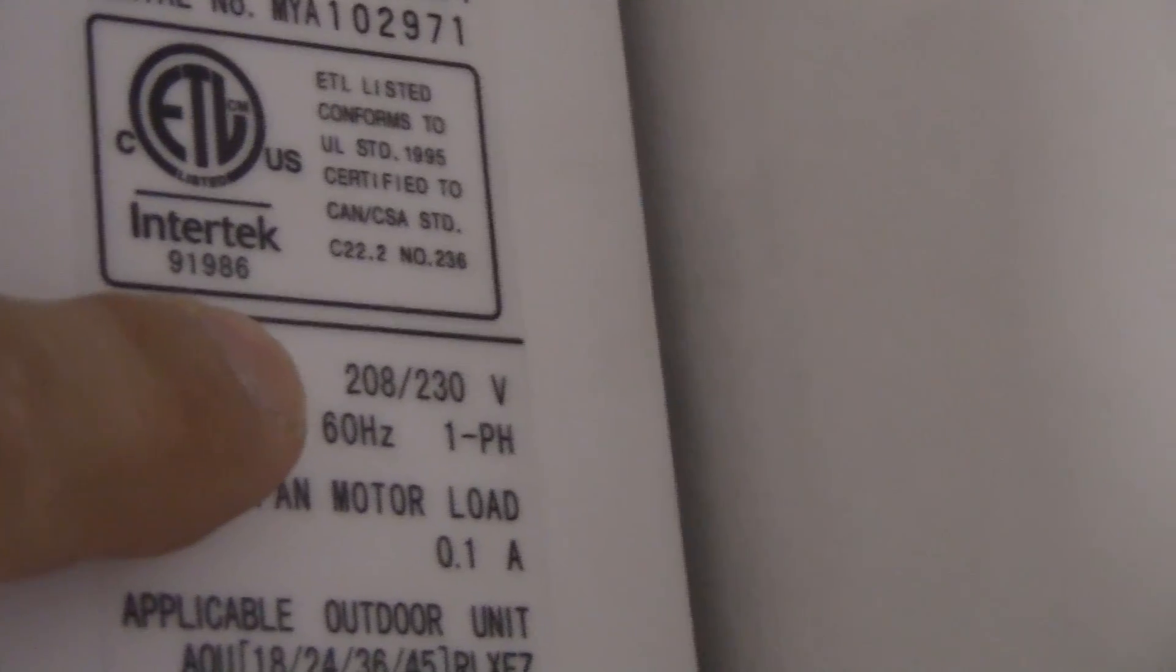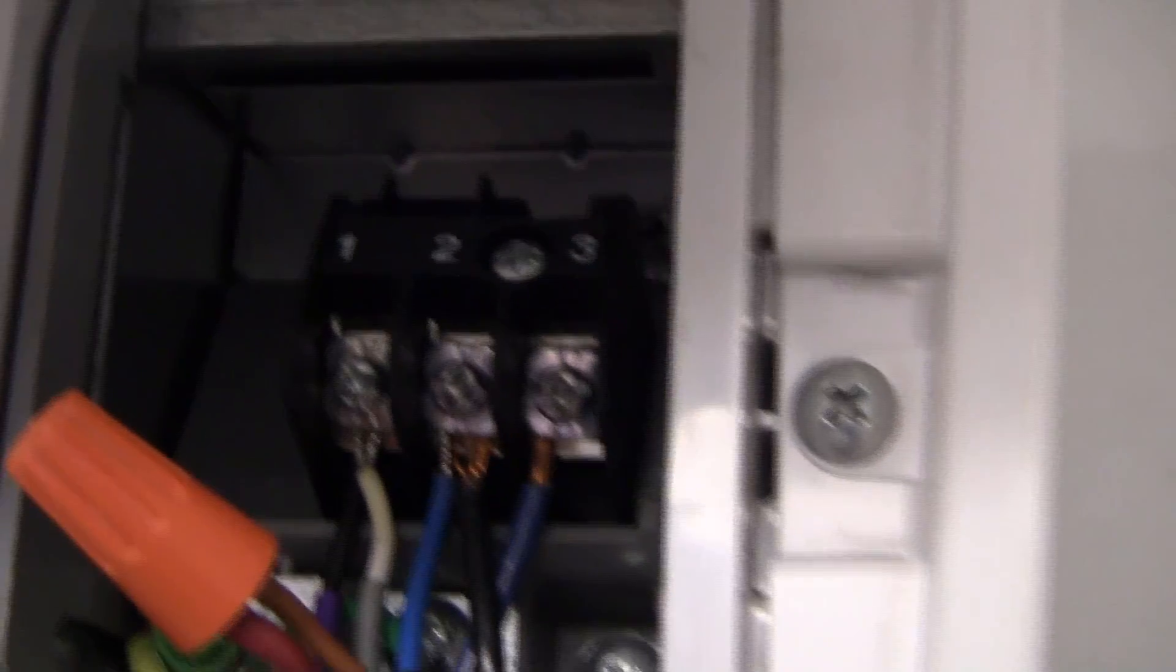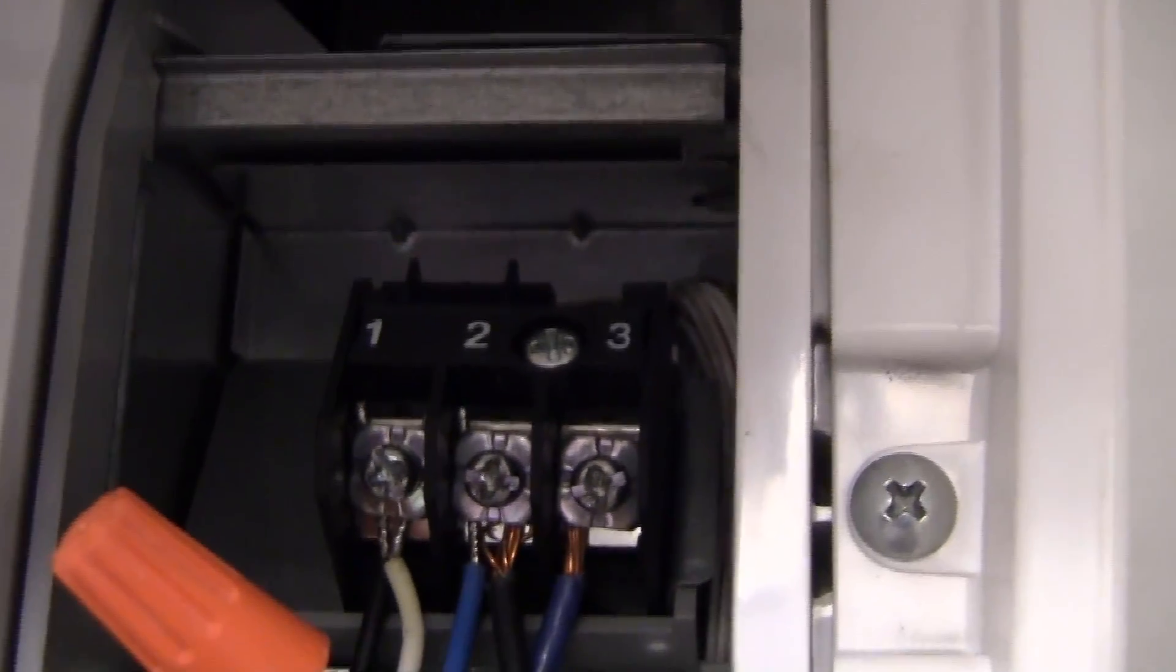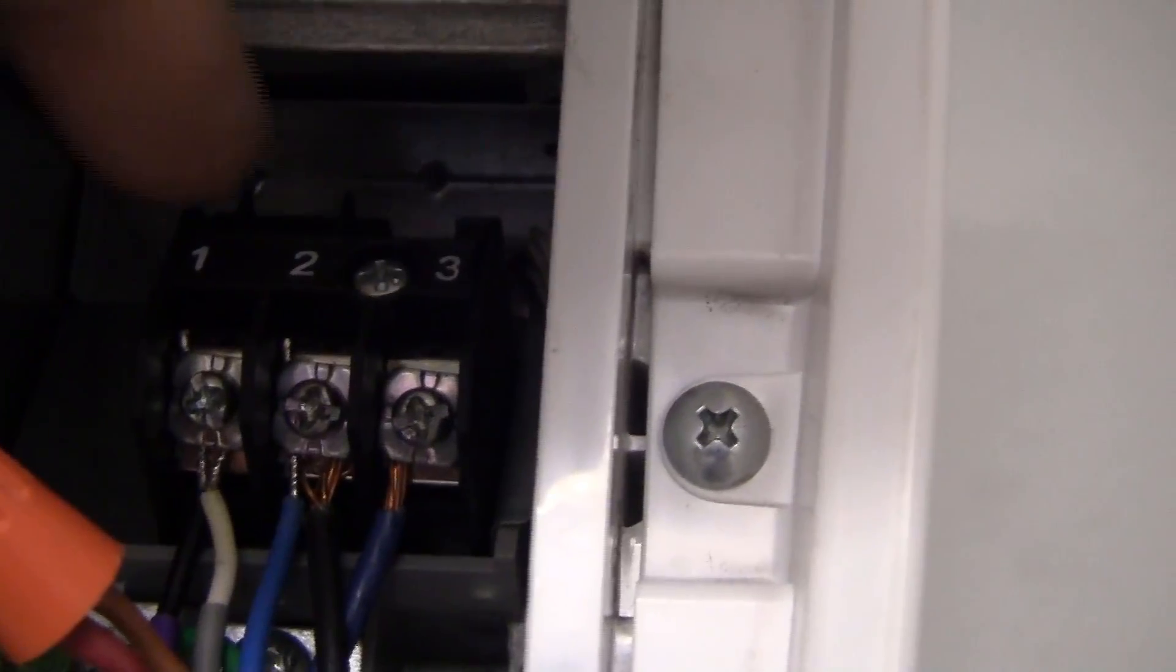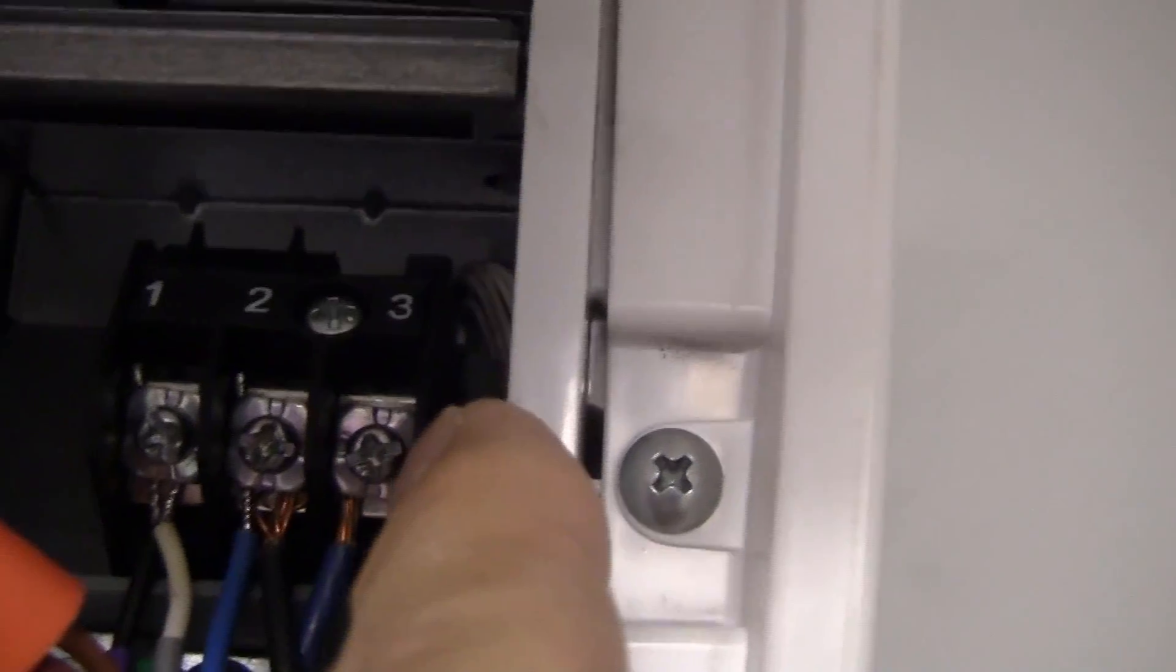So the evaporator that we're dealing with right here is a Fujitsu and you can see on the data nameplate that the voltage is 208-230 volts single phase and it's pulling not even one amp. I currently have the breaker off. When you're looking at your lines you have one, two and three. This is L1, L2 so that would be your hot 230 volts across those terminals and then on line three that's the communication wire that varies in voltage from 40 to 100 volts.